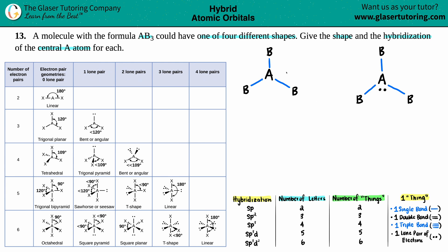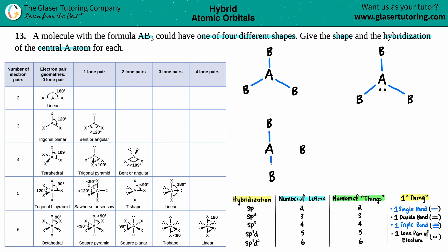We have two out of the four. Notice we're just increasing the number of lone pairs, because I have to keep my three B's — I can't add any B's or any A's. So now we'll draw A in the middle with three B's around it, and now I'm going to add not one lone pair but two lone pairs. That's the third one.